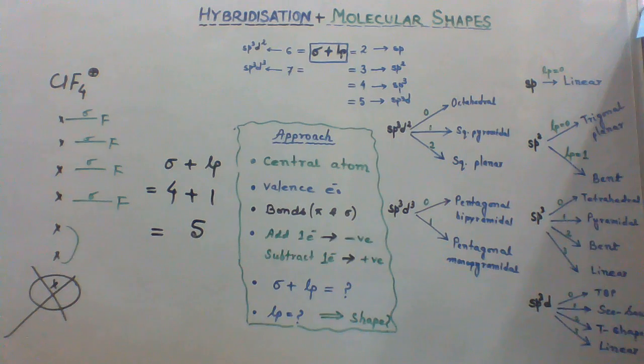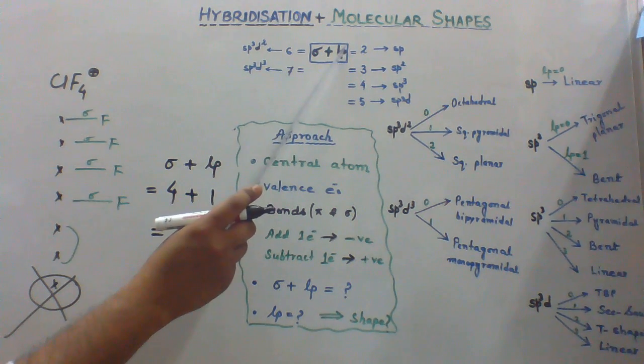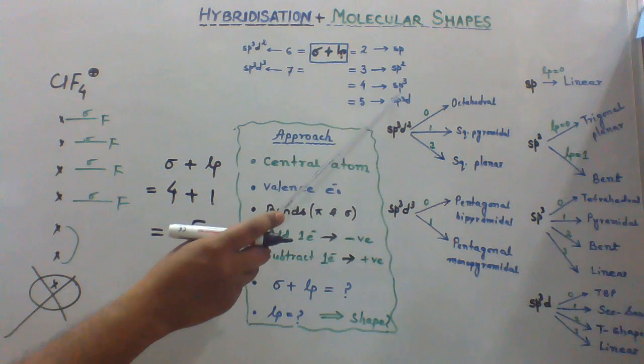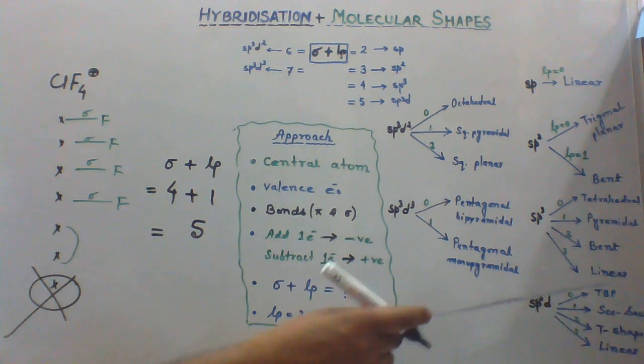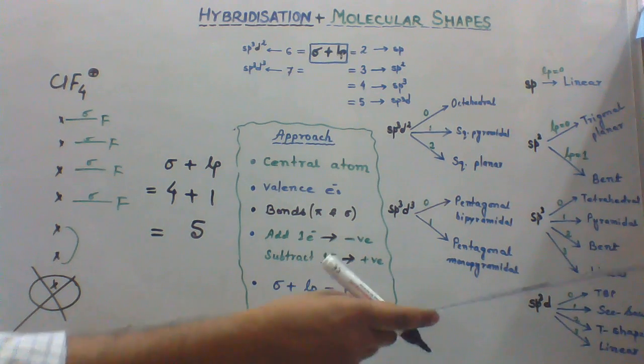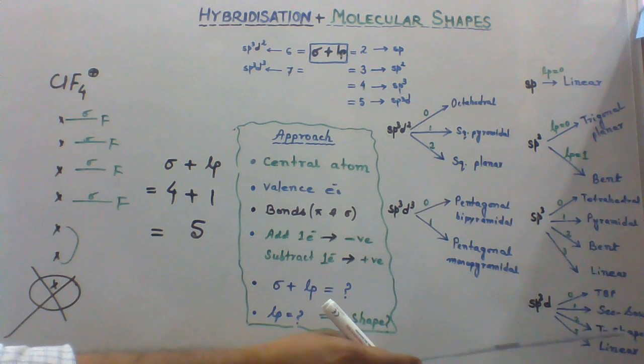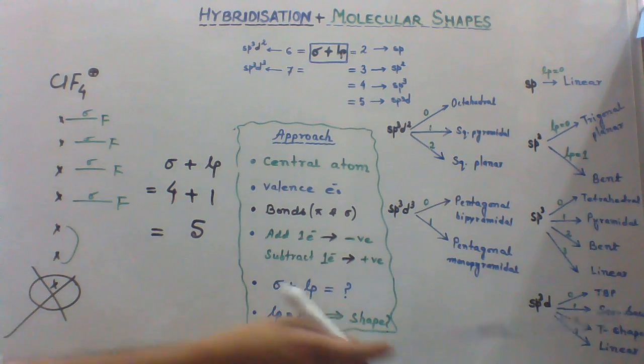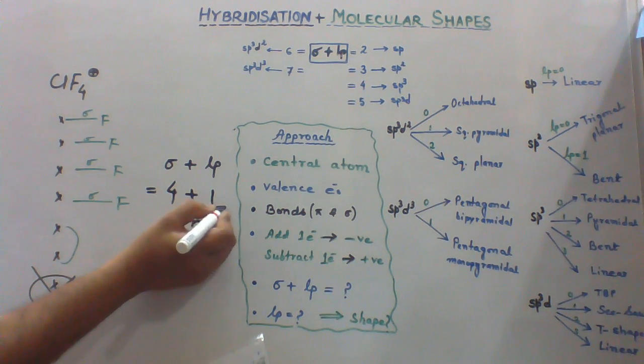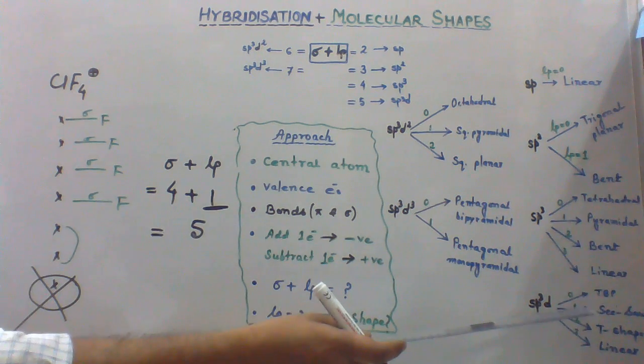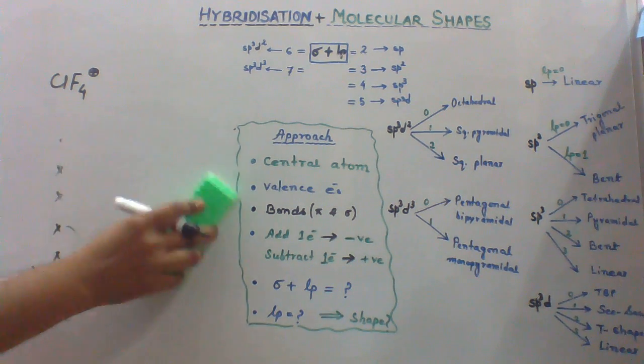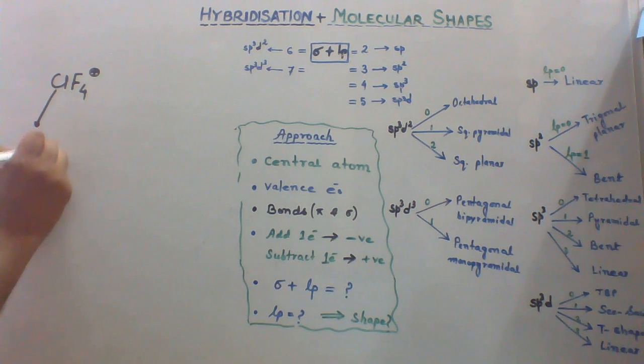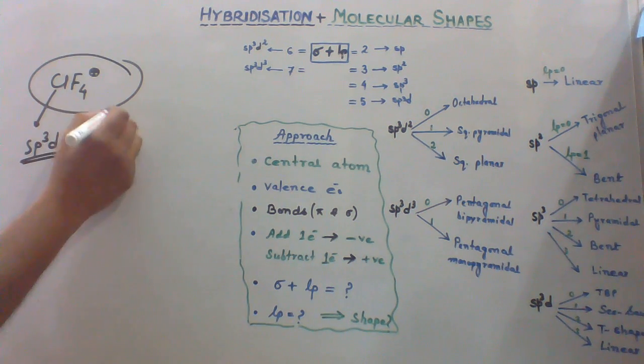And summation of sigma and lone pairs giving 5 corresponds to sp3d hybridization. Sp3d hybridization has 4 possibilities. Either it can be trigonal bipyramidal, or seesaw, or T-shaped, or linear. Since we have 1 lone pair, sp3d with 1 lone pair will have seesaw shape. So this hybridization is sp3d and the shape of this molecule is seesaw.